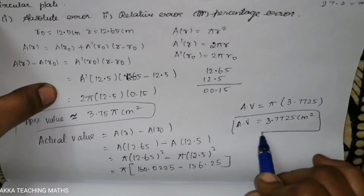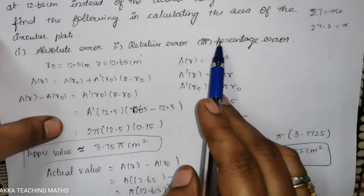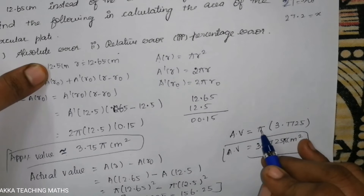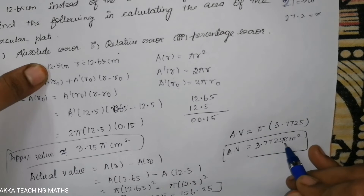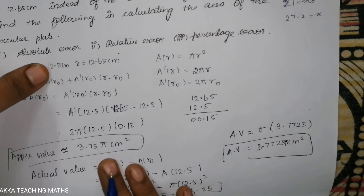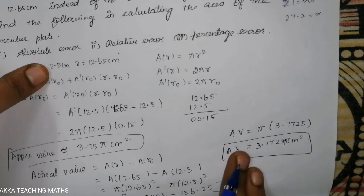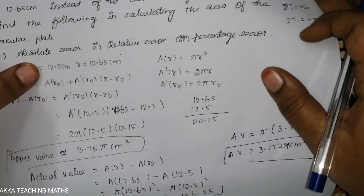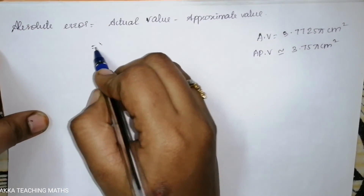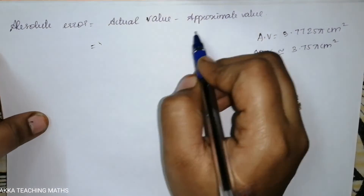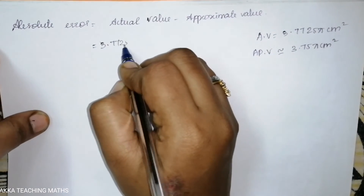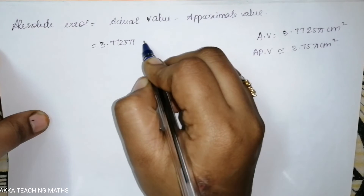Now we can find the absolute error, relative error, and percentage error. The absolute error formula is: actual value minus approximate value. The actual value is 3.7725π cm² minus the approximate value 3.75π cm².